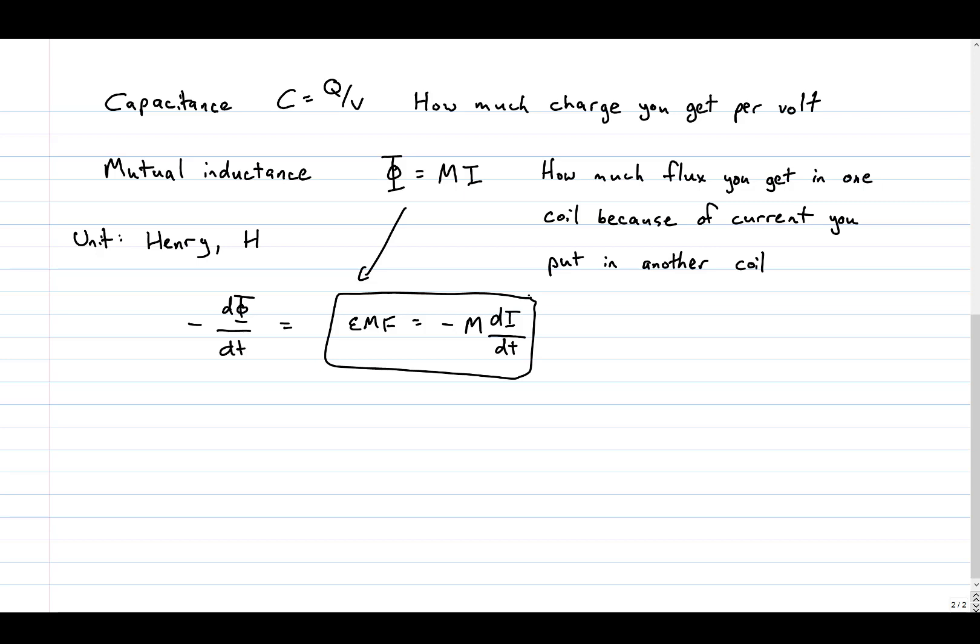The time derivative of a flux is an EMF, so we get that the EMF through one coil is related to the rate of change of current in the other coil times the mutual inductance. What this means conceptually is that if you know the mutual inductance of a system, and know something about the current you're feeding into that system, you can do a really quick multiplication to find out how much voltage is going to get induced in the output coil.